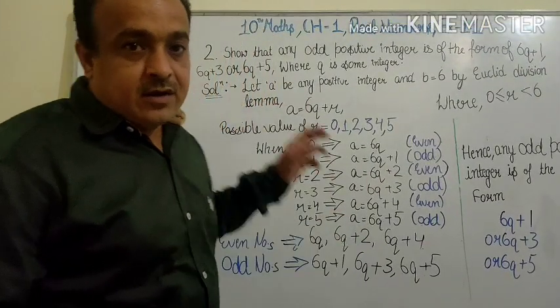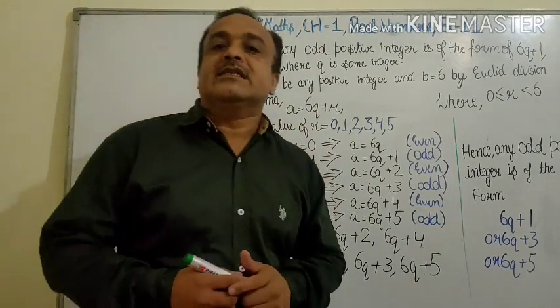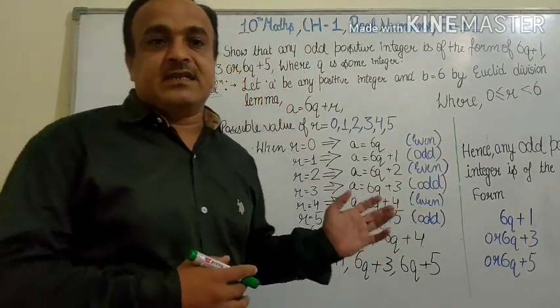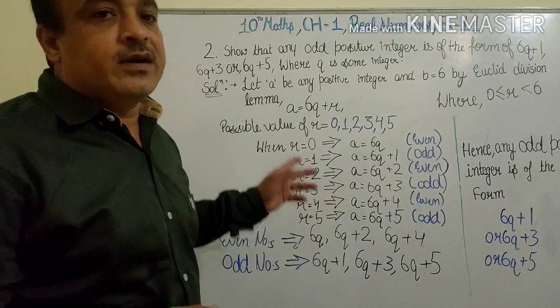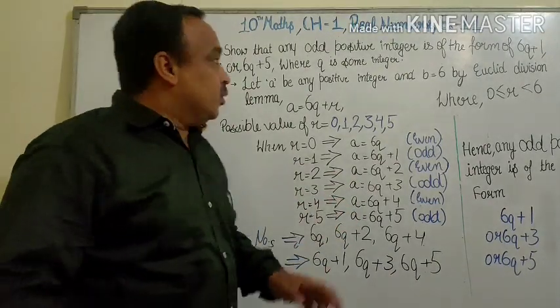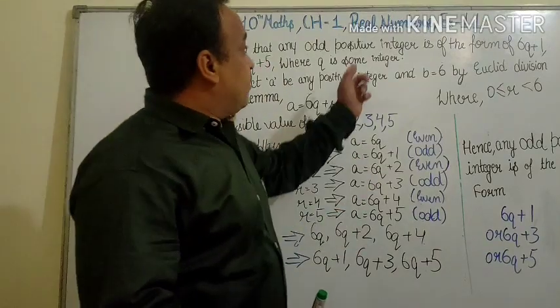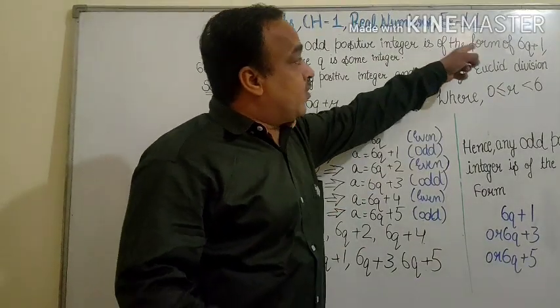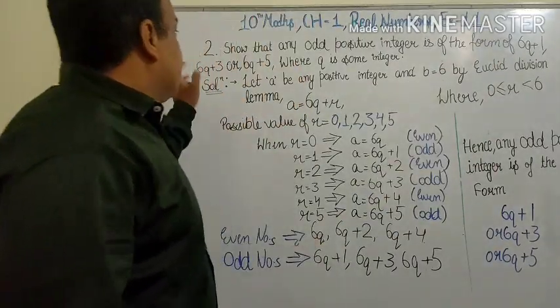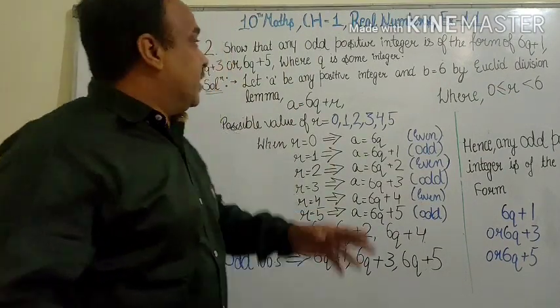Students, here we are discussing NCERT Math Class 10, Exercise 1.1, Question Number 2. Show that any odd positive integer is of the form 6q+1, 6q+3, or 6q+5, where q is some integer. We have to prove that any odd positive integer is 6q+1, 6q+3, or 6q+5.